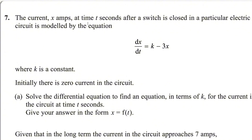The current x at time t seconds after a switch is closed in a particular electric circuit is modeled by the equation dx/dt = k minus 3x, where k is a constant. Initially there is zero current in the circuit. Solve the differential equation to find an equation in terms of k for the current at time t seconds, giving your answer in the form x = f(t).